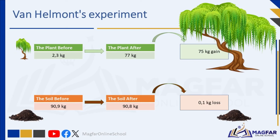Looking at the numbers from this experiment, the tree had gained almost 75 kg, but the soil had only lost 0.1 kg. The soil did not lose its mass, but the tree gained 75 kg. The plant could not have taken that mass from the soil, otherwise the soil would be almost finished after five years. The increase in the mass of the plant must have come from another source. Jan Baptiste van Helmont's willow tree experiment proved that plants gained weight by using water and not soil. Scientists later concluded that plants are able to manufacture their own food through the process of photosynthesis.